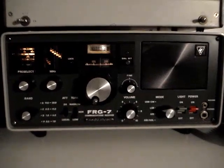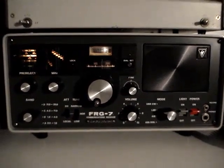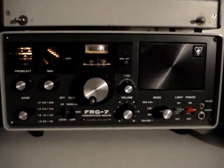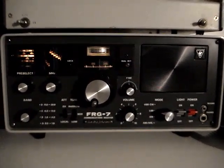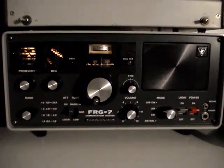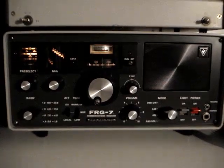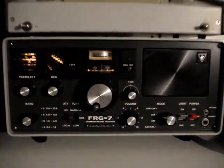Hello, here is Kostas, Sierra Victor III, Oscar Romeo Alpha, and today we're going to see a very interesting modification to the FRG7 receiver produced by Yaesu.